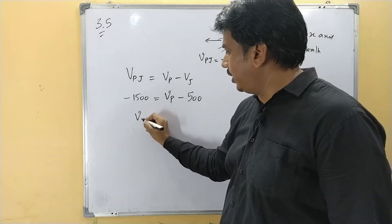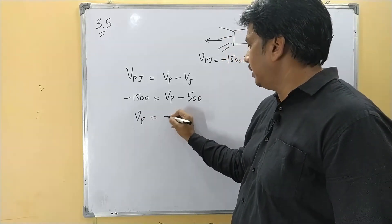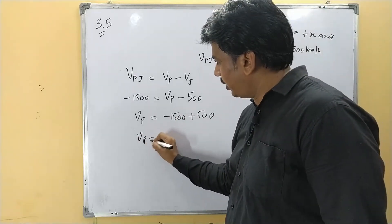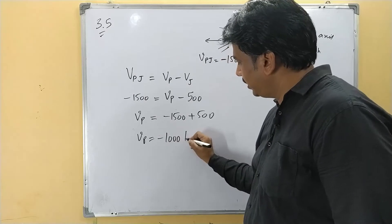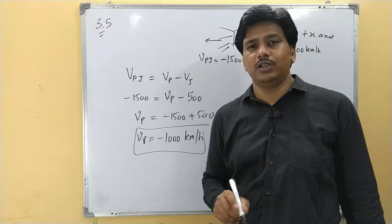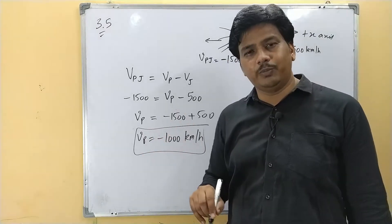So it means velocity of the product is minus 1500 plus 500. So velocity of the product is minus 1000 km per hour.